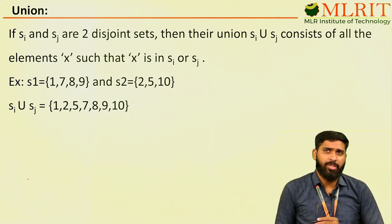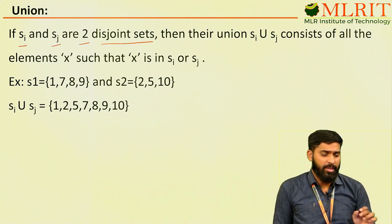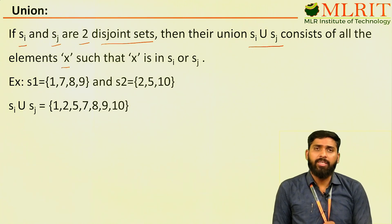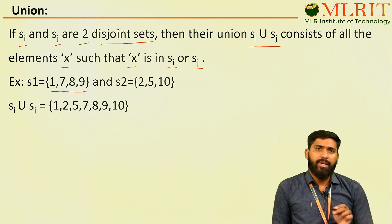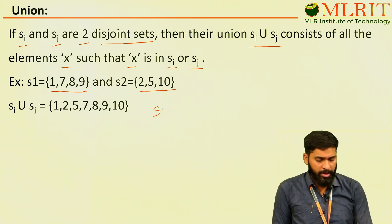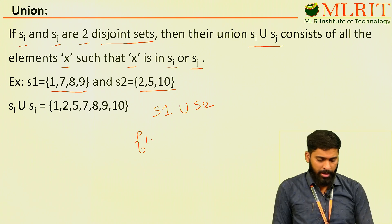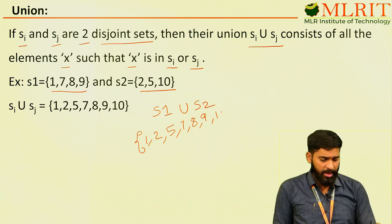First we see the union operation. If Si and Sj are two disjoint sets, then their union Si ∪ Sj consists of all the elements x such that x is in Si or Sj. For example, S1 equals to {1, 7, 8, 9} and S2 equals to {2, 5, 10}. Now, S1 union S2 is: 1 is in S1, 2 is in S2, 5 is in S2, 7 is in S1, 8 is in S1, 9 is in S1, 10 is in S2.